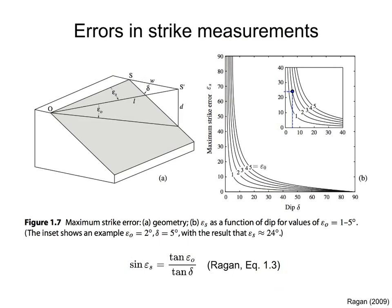Suppose we have a gentle plane dipping 5 degrees, indicated by the vertical blue line in the inset, and suppose the error in determining the horizontal on the plane is 2 degrees, indicated by the dot in the inset. The error in strike is 24 degrees. Therefore, the error in strike can be large, particularly for gentle planes of low dip.